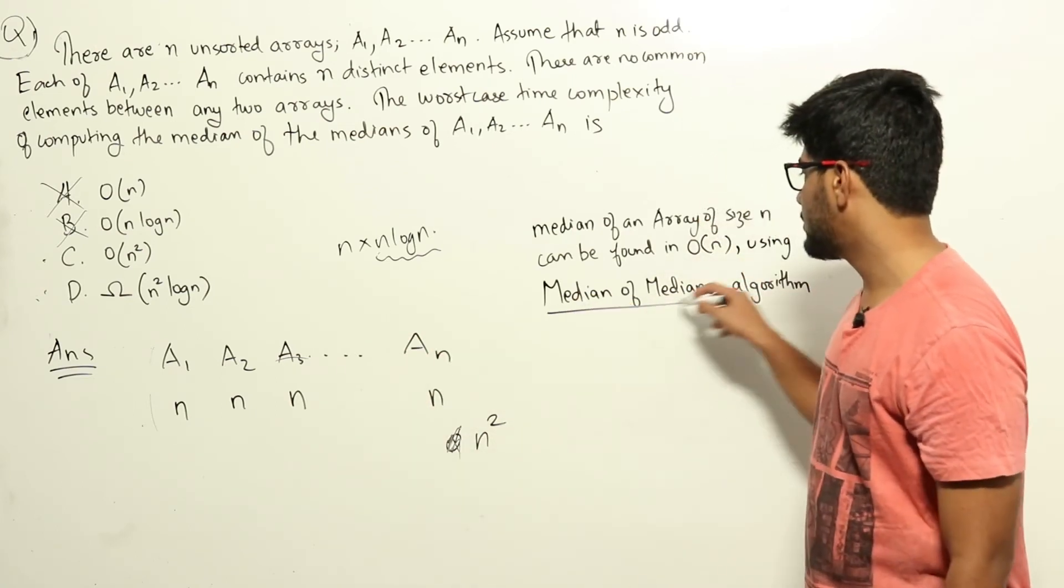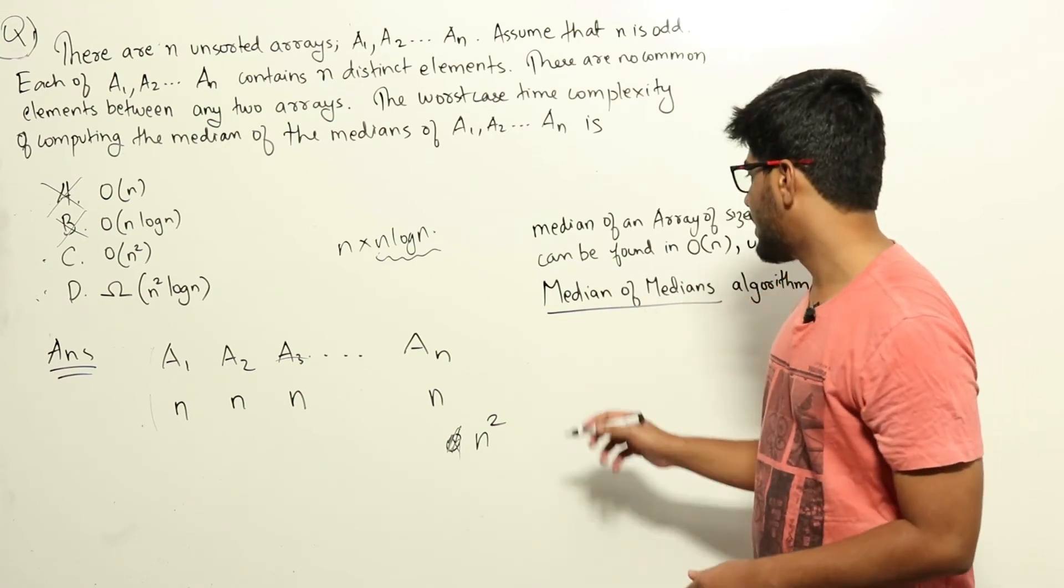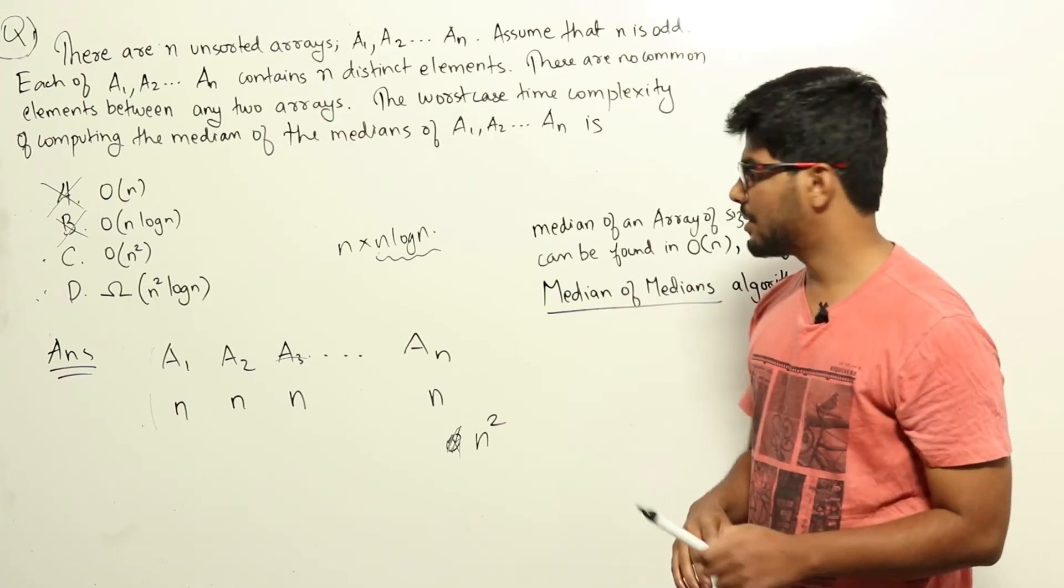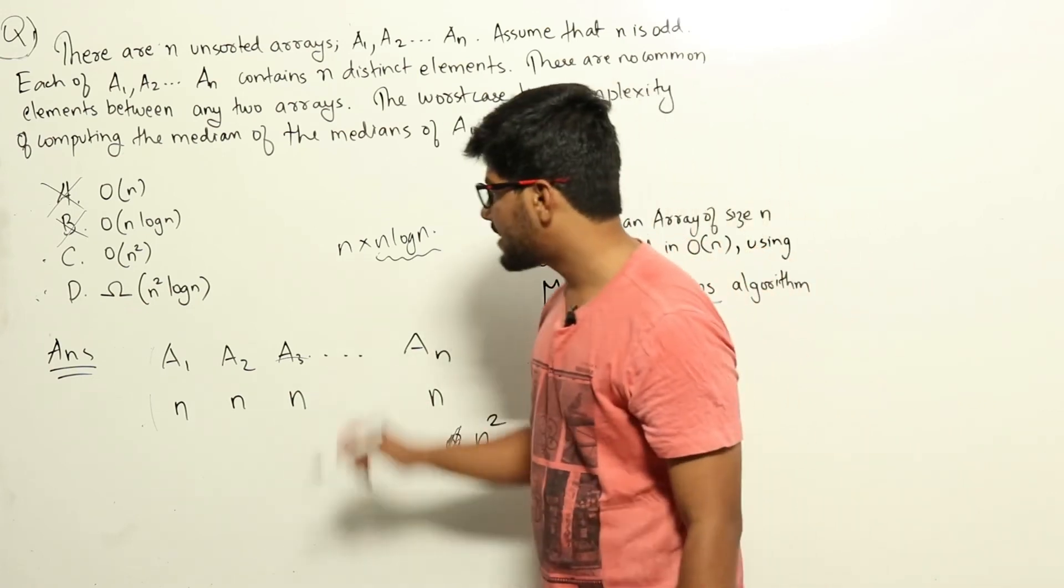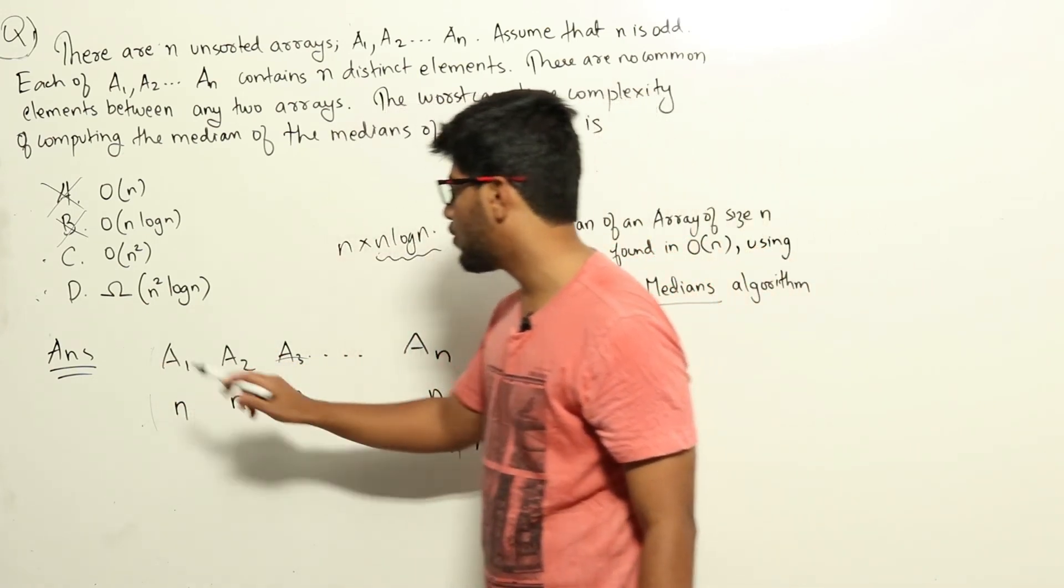So you can learn about this algorithm here. You can learn about this online or in Wikipedia or somewhere. Please learn about this. So using that algorithm, I can get the median of each of the arrays in O(n) time.